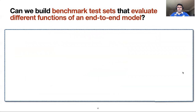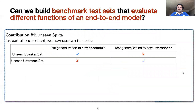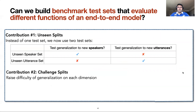To evaluate different portions of the end-to-end model, we create new test splits. One test set assesses the speech processing skills and the other tests the natural language understanding abilities. We further create a challenge split that uses additional constraints to make both test sets more difficult for the corresponding subtasks.